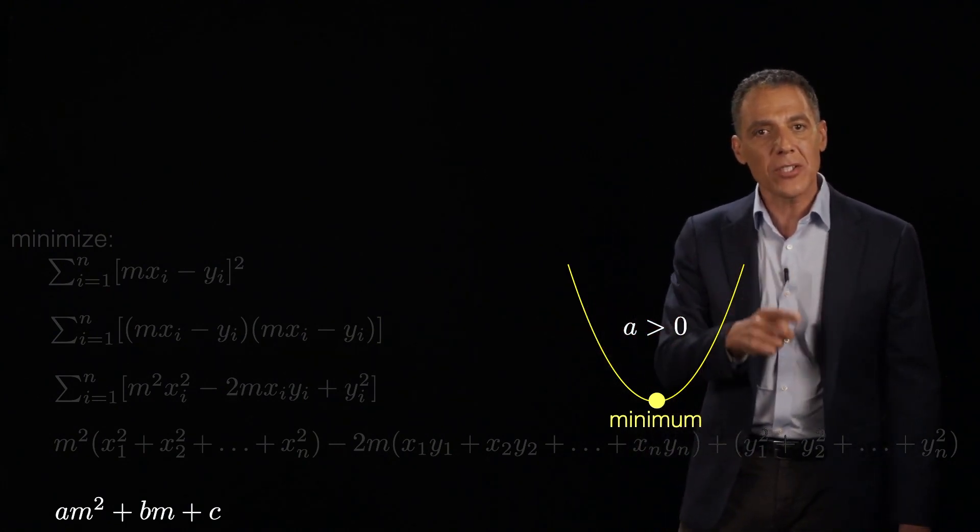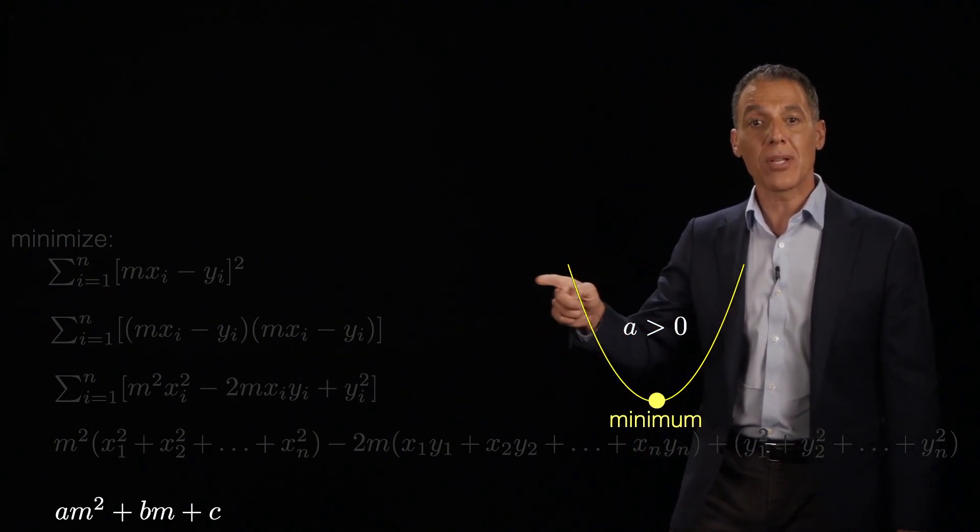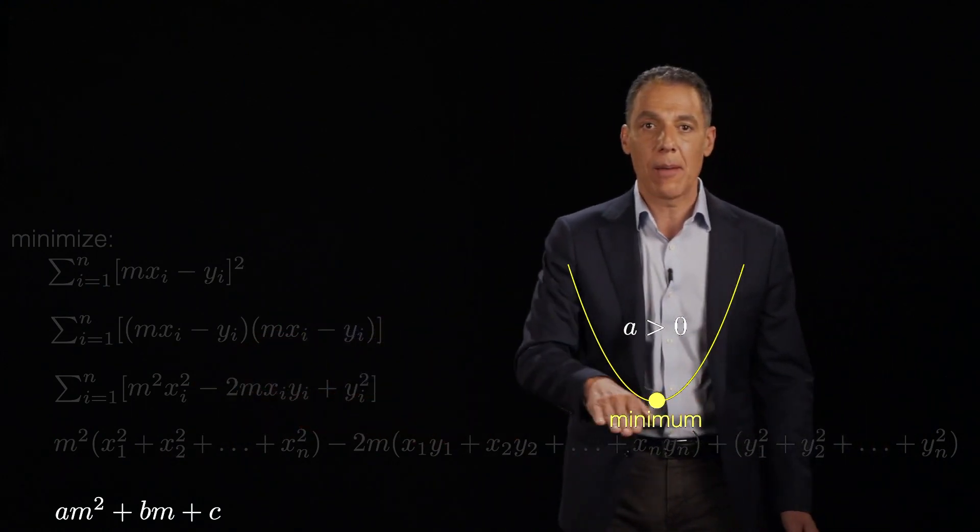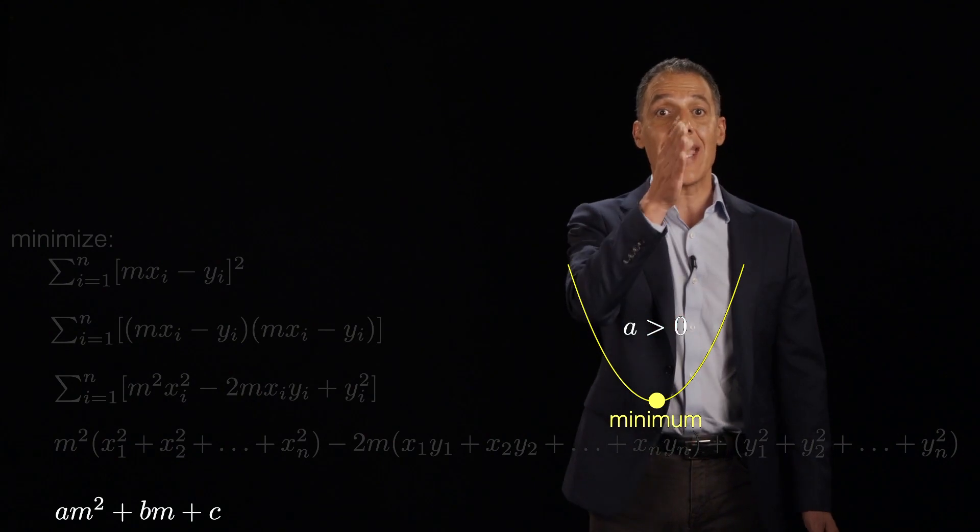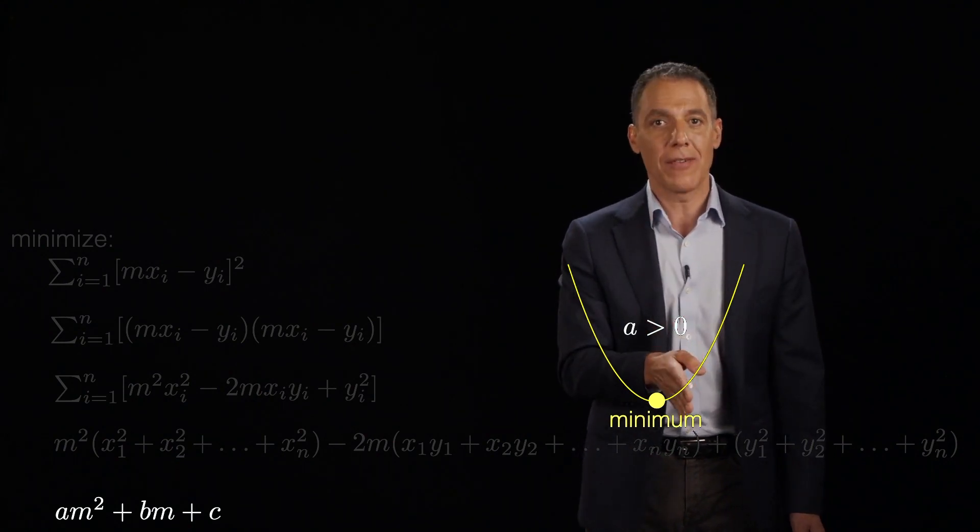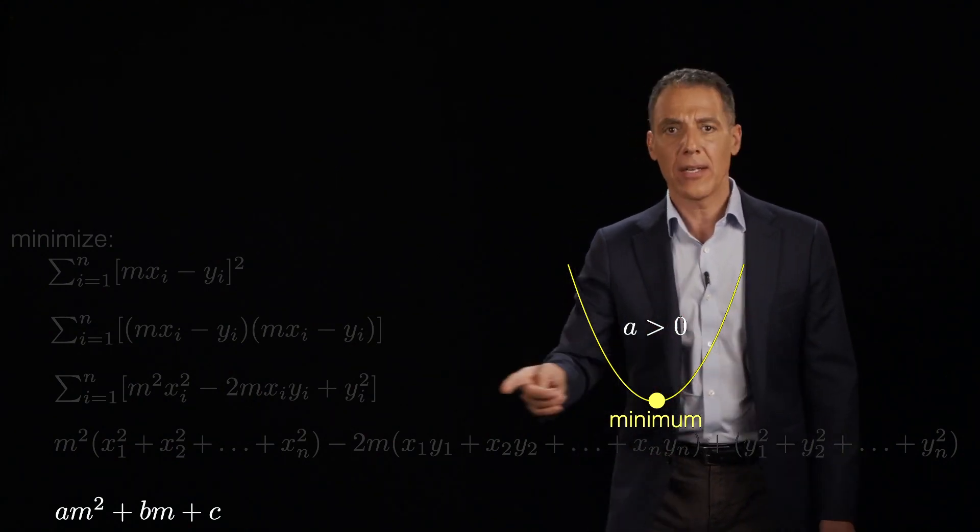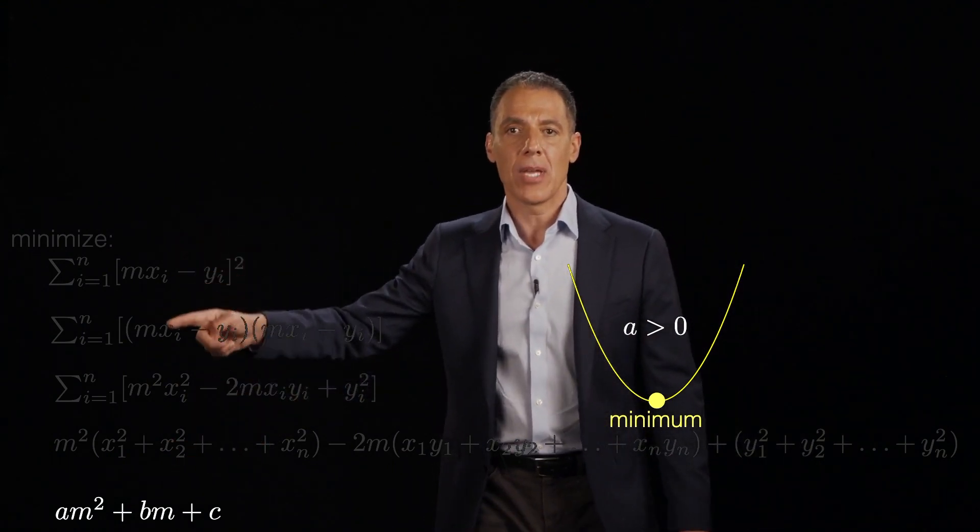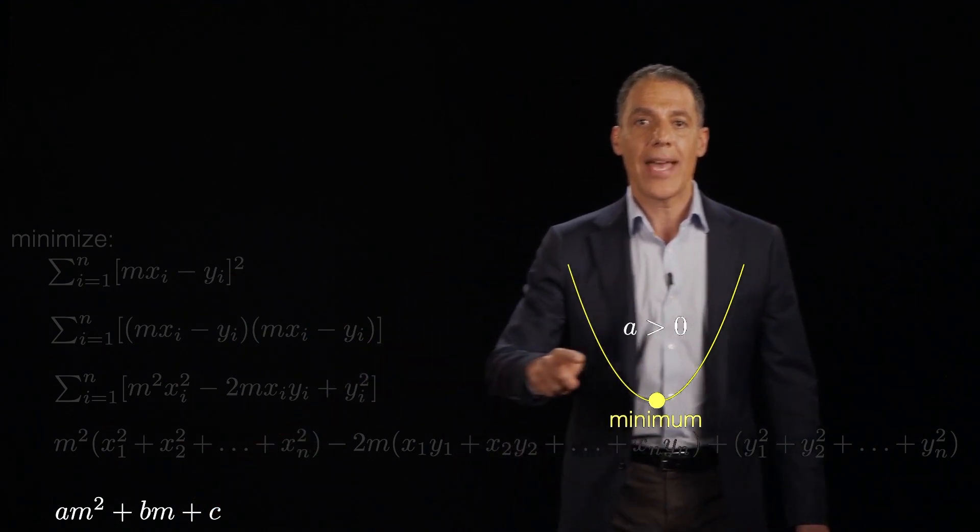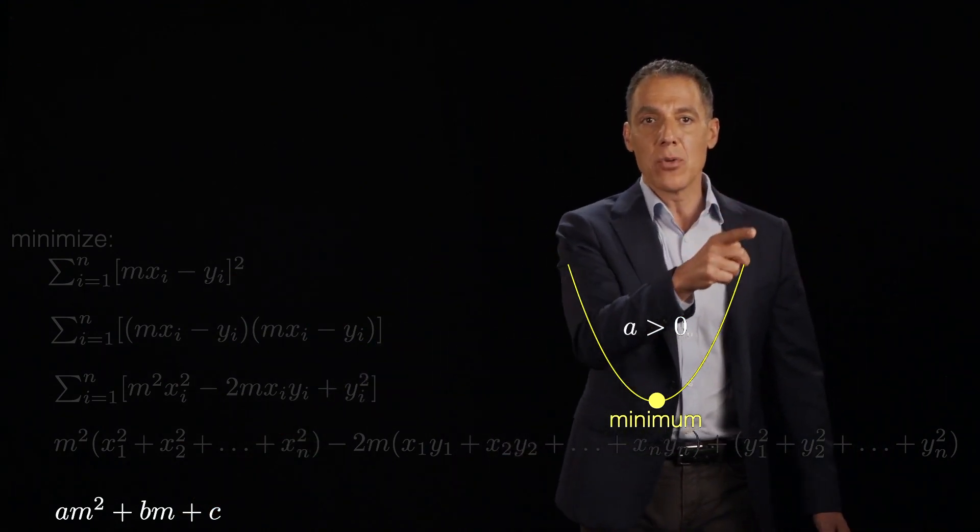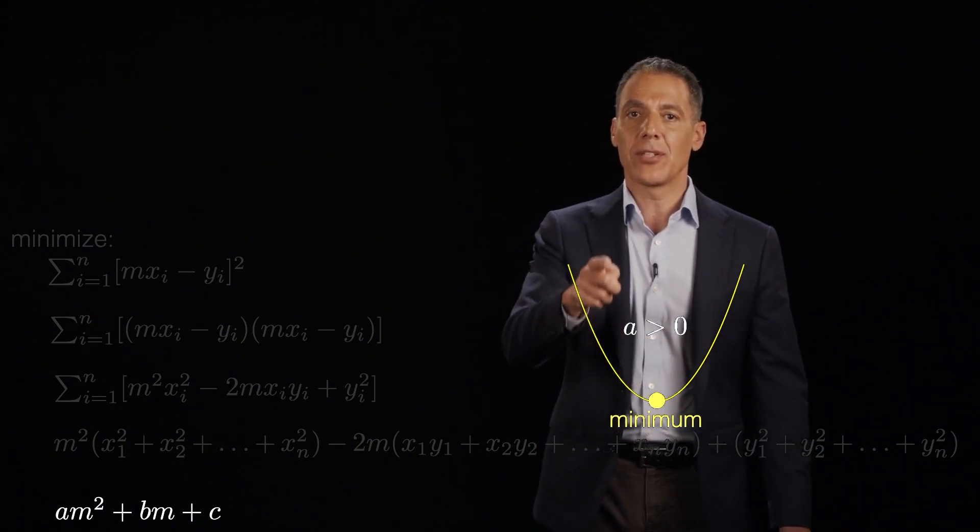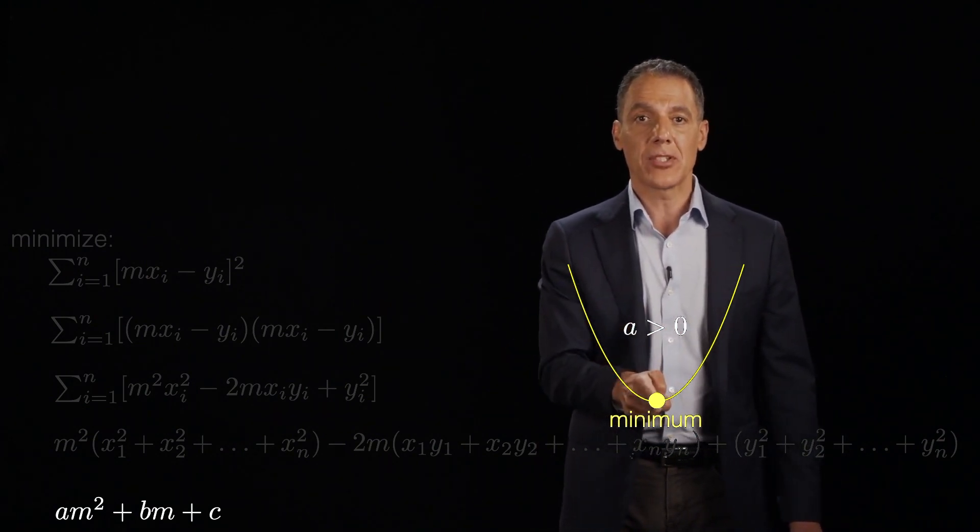And why do I care about that? Because again, what is this parabola? It's a parabola in m. So that means that the horizontal axis here is m. And what's the vertical axis? The error as a function of m. How do I know that? Well, that's what I did, right? So I went from my error as a function of m, I did a little bit of algebra and I came up with a parabola. And that tells me that as I move m from a small number, from a negative number to a positive number, let's say, the minimum is going to be here.